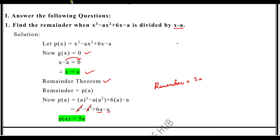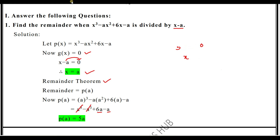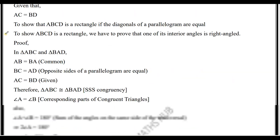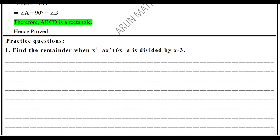The steps for the remainder theorem are: equate g(x) to zero, find out the value of x, then substitute that value into p(x). For example, if we get x equals k, then p(k) will be the remainder. There are a few practice questions included in the worksheet — for instance, replacing a by 3 so you can find the value of the remainder.